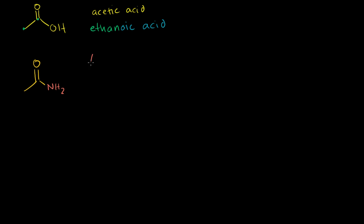This thing right here is called an amide, or an amide. And if we were to give this its common name, this would be acetamide. Acetamide, and if we wanted the systematic name for it, it would be ethanamide. You have two carbons right there. So it is ethanamide.